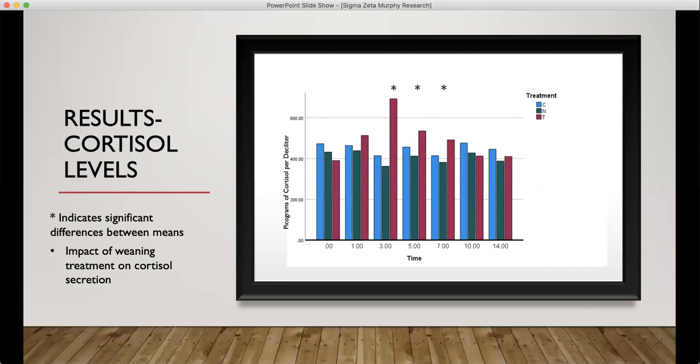At time zero, pretty much all the calves were experiencing the same amount of cortisol release. 24 hours later, we see that the traditionally weaned calves are starting to experience stress and the cortisol levels are starting to increase. And 72 hours after weaning, we see a peak in cortisol from the traditionally weaned calf group. The average for this was about 650 picograms per deciliter for the traditional group, and for the other groups it was around 400. So from this we can see about a 40% increase in cortisol secretion.